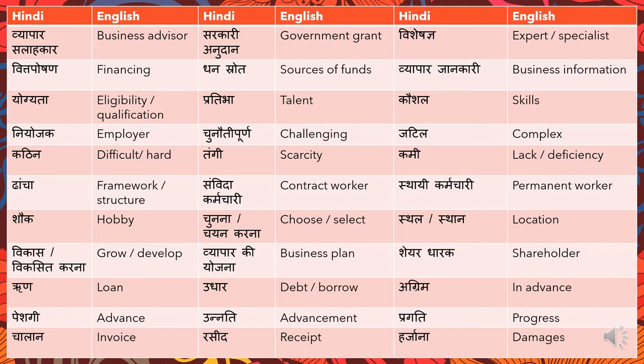'Tangi' means 'scarcity' or a lack of something. 'Kami' means 'lack' or 'deficiency.' 'Dhacha' means 'framework' or 'structure.' In a dialogue it might appear as 'what is the business structure you are going to frame your company around.'